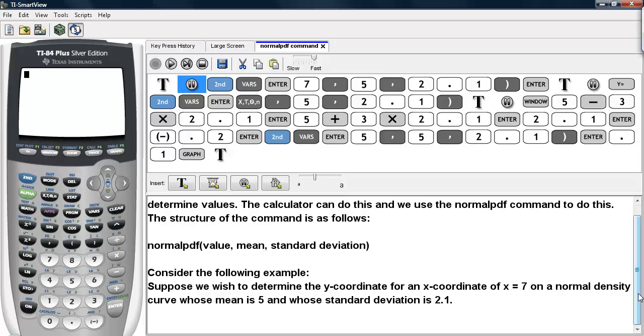Let's consider the following example. Suppose we wish to determine the y-coordinate for an x-coordinate of x equals 7 on a normal density whose mean is 5 and whose standard deviation is 2.1.